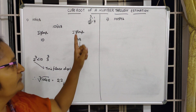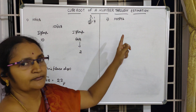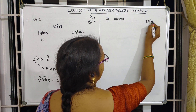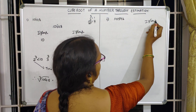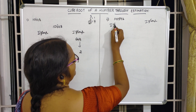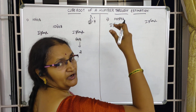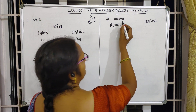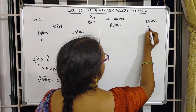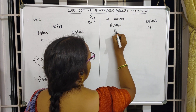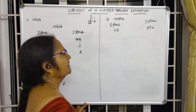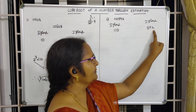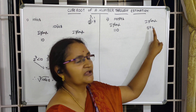One more example. First step: we divide the number into two groups — the first group and the second group. In the first group, from the right-most end, take 3 digits: one, two, three. Those digits are 5, 9, 2 forming the first group, and the remaining numbers — 110 — go to the second group.